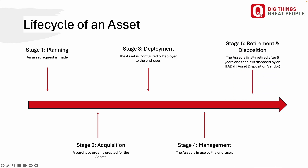The final stage is the retirement and disposition stage. This stage involves the retirement and disposal of assets when they reach the end of their useful life and no longer provide value to the organization. Typically, an ITAD vendor will collect and either recycle or destroy the asset. For example, the desktop is retired, placed into an asset management stockroom, and then finally disposed of by an ITAD vendor.